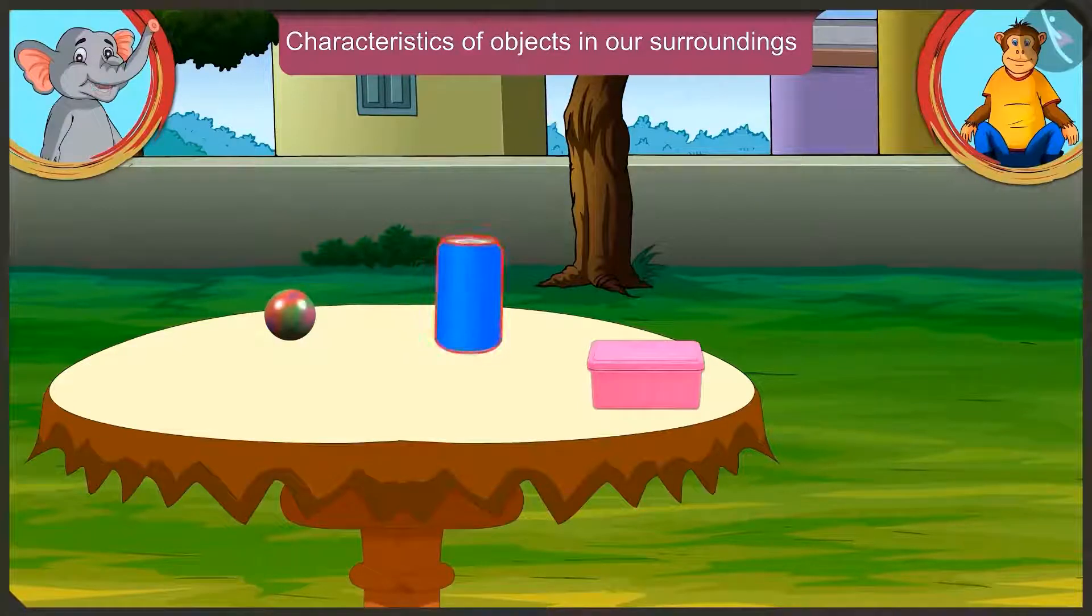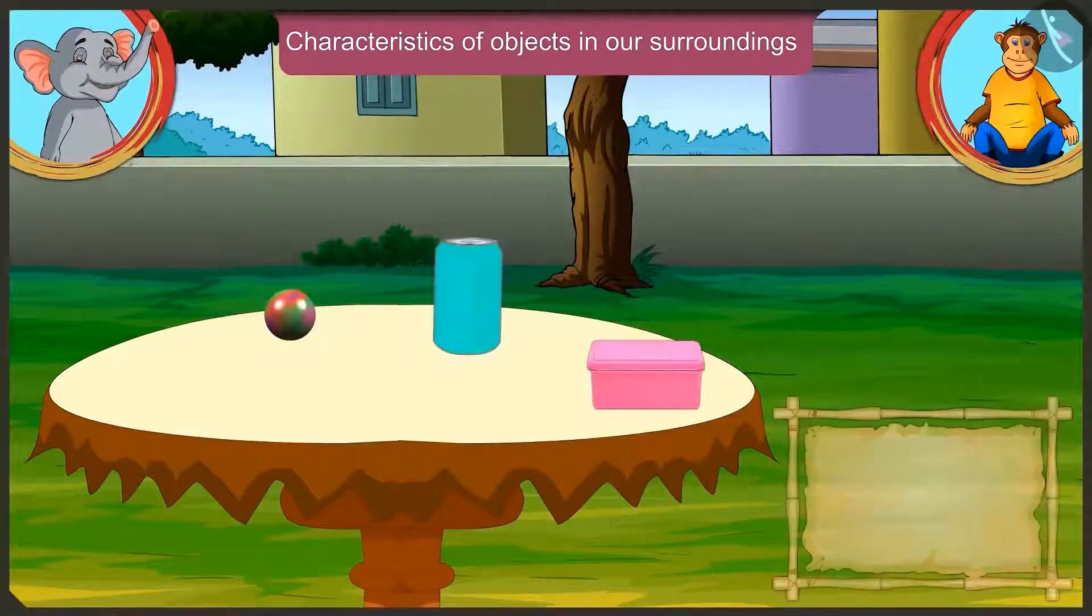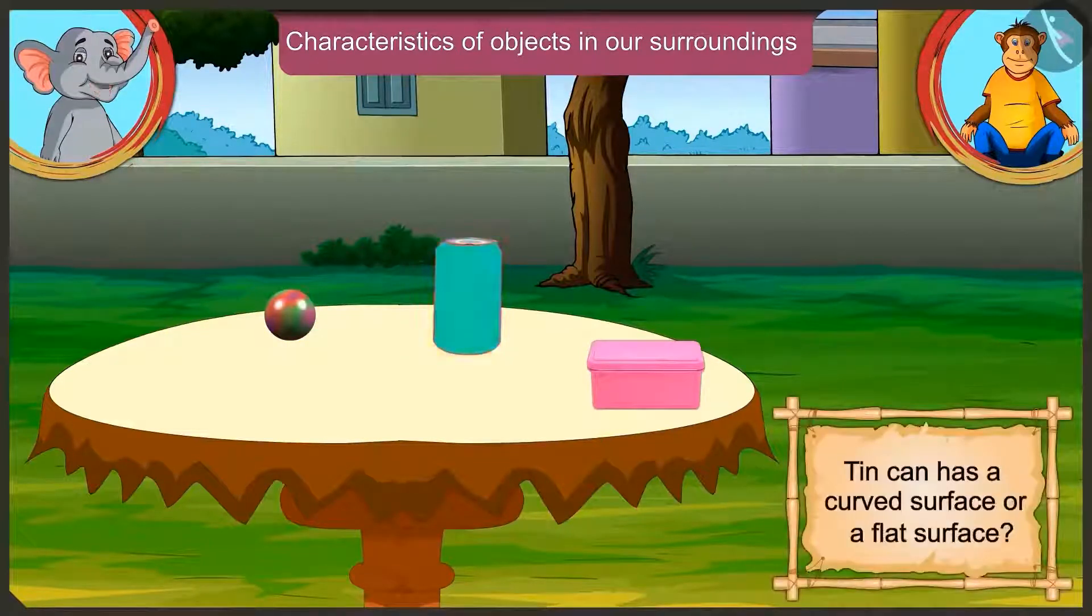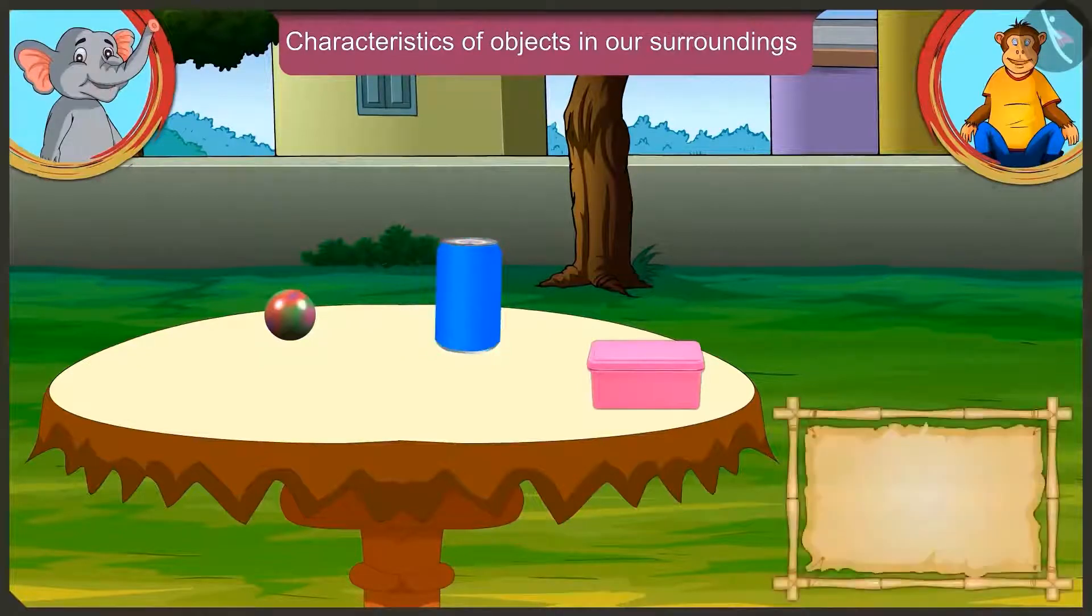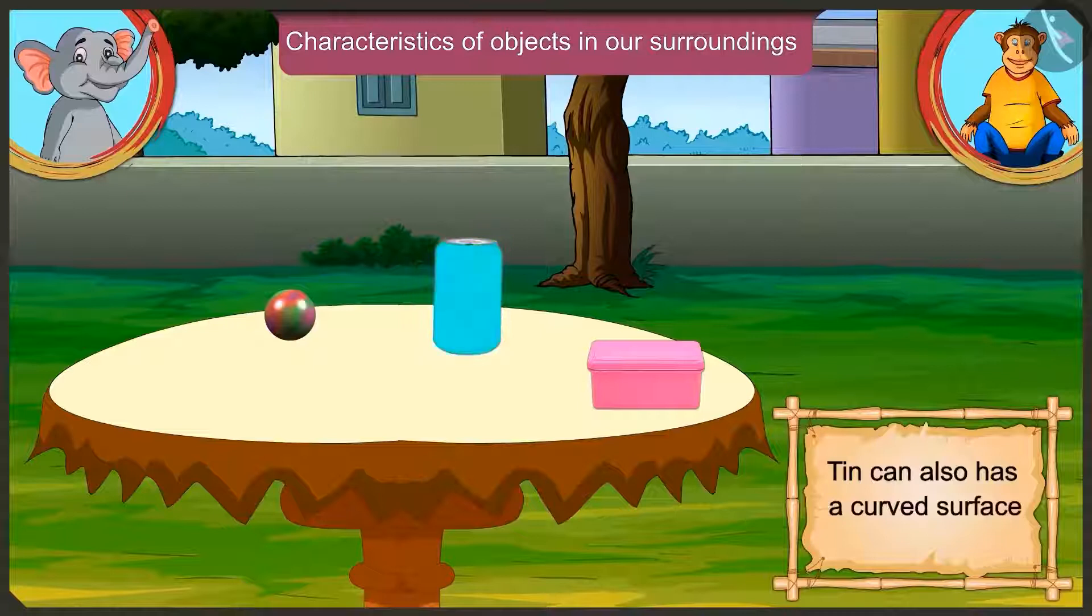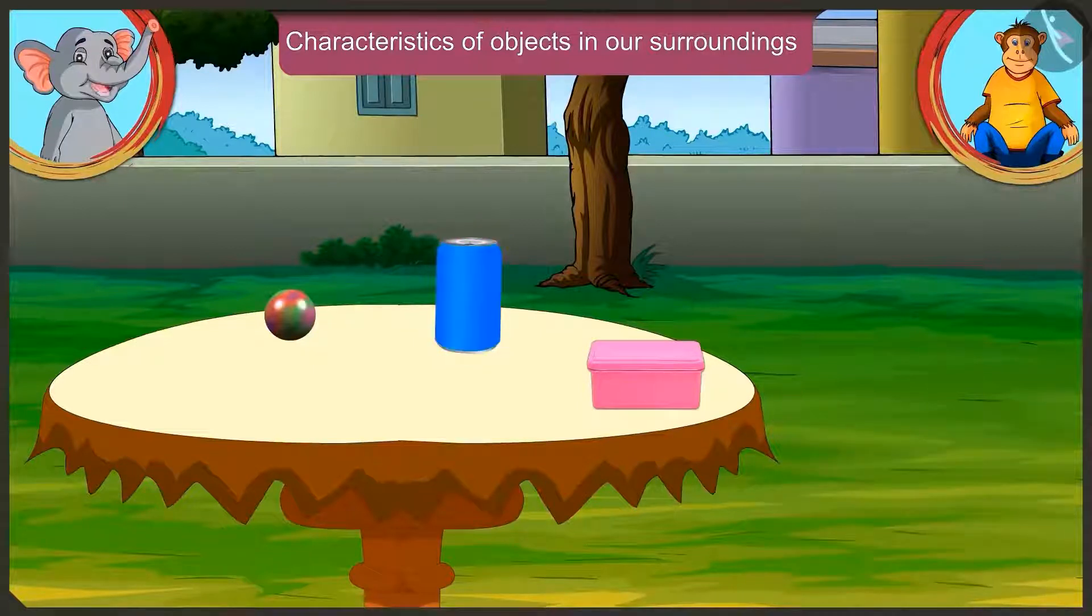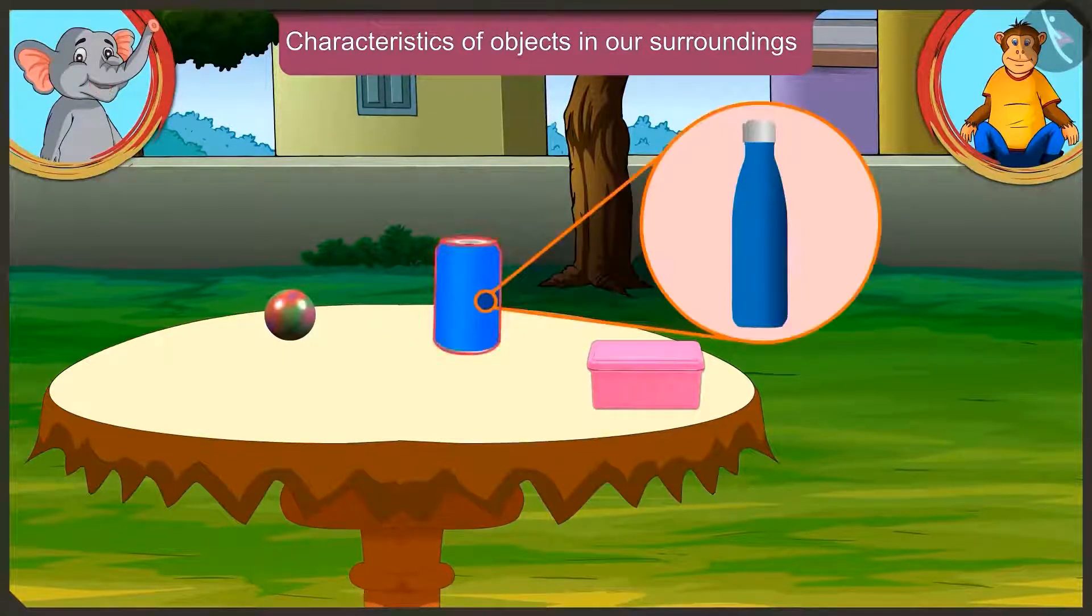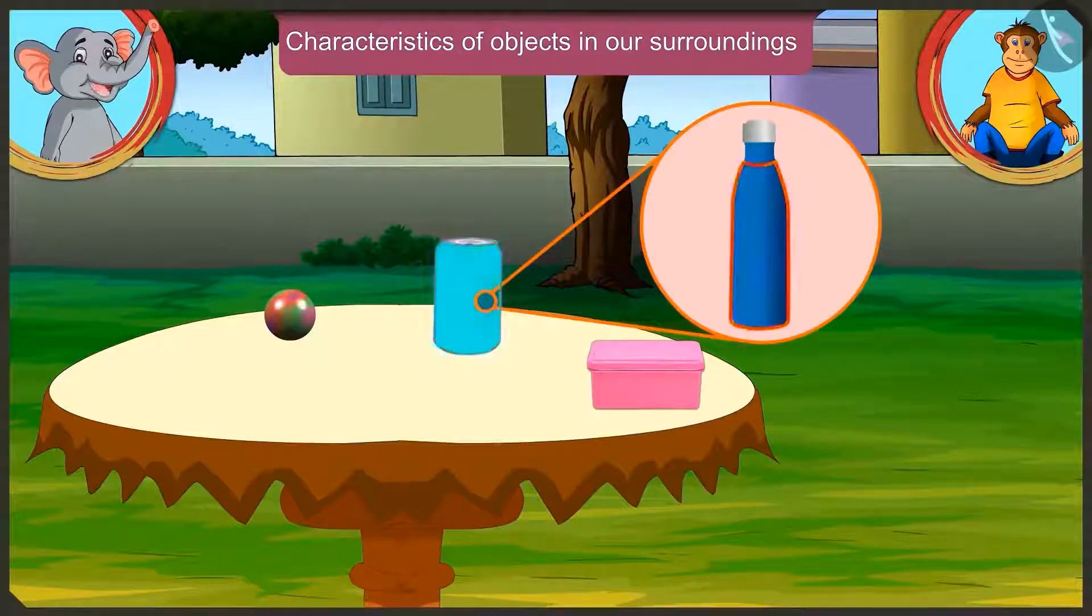And the tin can? Hey, this can stand upright like the lunchbox, but it is also curved like the marble. So does it have a curved surface or a flat surface? It has a cylindrical shape. That means it is a cylinder. The surface of cylindrical objects are curved. Okay, I understand that this tin can also have curved surface just like the water bottle.